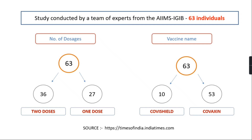Among the 63 individuals, 10 had been vaccinated with Covishield and the remaining 53 had been vaccinated with Covaxin. This study by AIIMS IGIB shows that even though a person is vaccinated with available vaccines, they can still be infected with the Delta variant.